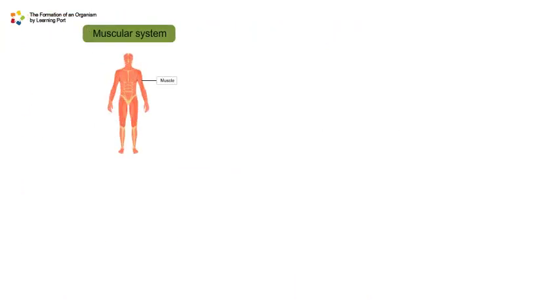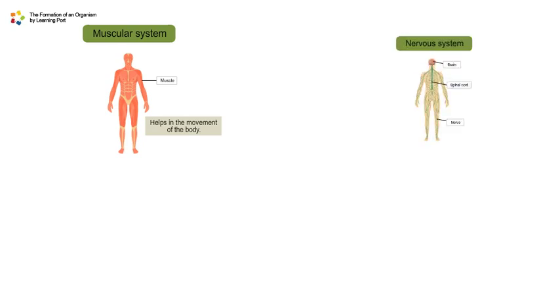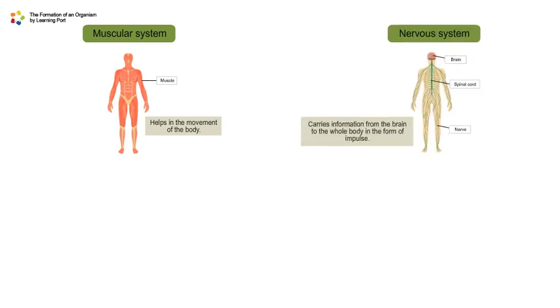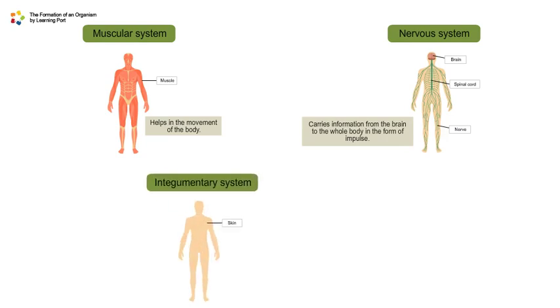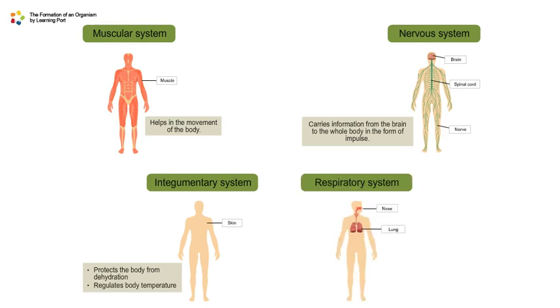The muscular system helps in the movement of the body. The nervous system carries information from the brain to the whole body in the form of impulse. The integumentary system protects the body from dehydration and regulates body temperature. The respiratory system absorbs oxygen and releases carbon dioxide from the body.